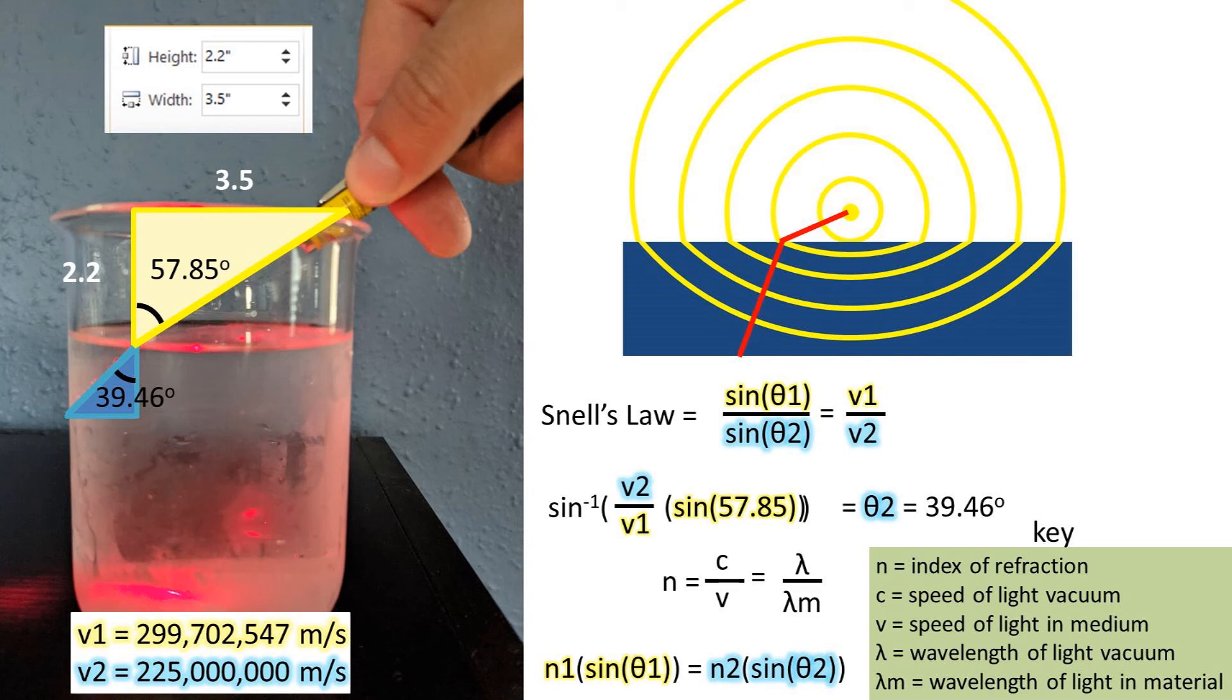Which also equals the wavelength of light in a vacuum, divided by the wavelength of the light through the material. The equation then is, the index 1, times the sine of angle 1, equals the index 2, times the sine of the angle 2.